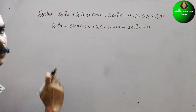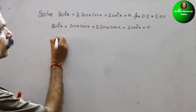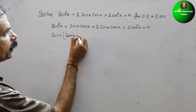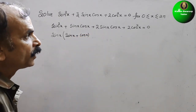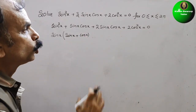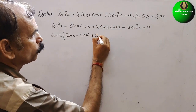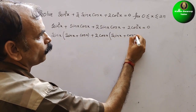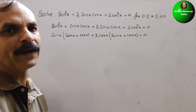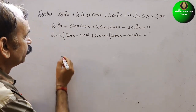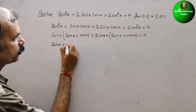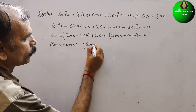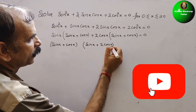From the first two terms, sinx is common, giving sinx(sinx + cosx). From the last two terms, 2cosx is common, giving 2cosx(sinx + cosx). So we get two factors: (sinx + cosx) and (sinx + 2cosx), and their product equals 0.